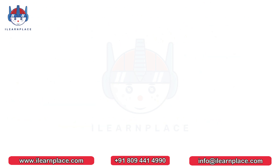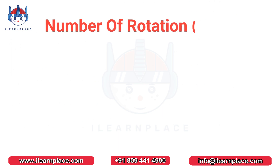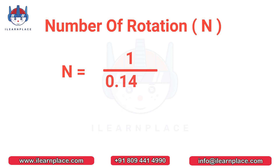Now, let's calculate how many rotations the wheel needs to complete to travel a distance of 1 meter. Simply divide 1 meter by the circumference of the wheel, which is 0.1464 m. The answer is 6.83, which means the wheel needs to rotate 6.83 times to complete a distance of 1 meter.